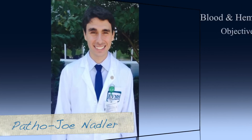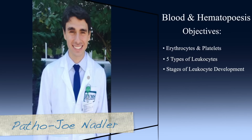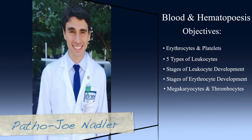For today's lab, you should be able to identify erythrocytes, platelets, and the five types of leukocytes in peripheral blood smears. Identify the different stages of leukocyte development, erythrocyte development, and find megakaryocytes in bone marrow. You will need to identify blood cells in various tissues, as they are not just present in blood smears. In lab, you will need to use oil immersion to look at these slides at 100x, so please clean up once you have finished.